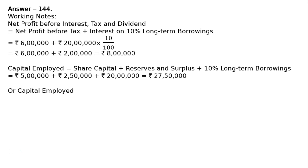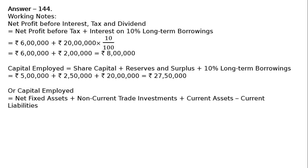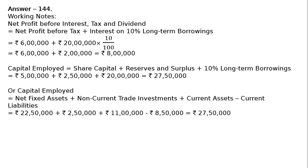Alternatively, capital employed can be found as net fixed assets plus non-current trade investments plus current assets minus current liabilities. That is Rs. 22 lakhs 50,000 plus Rs. 2 lakhs 50,000 plus Rs. 11 lakhs minus Rs. 8 lakhs 50,000 — either from the liability side or from the asset side. That is equal to Rs. 27 lakhs 50,000.